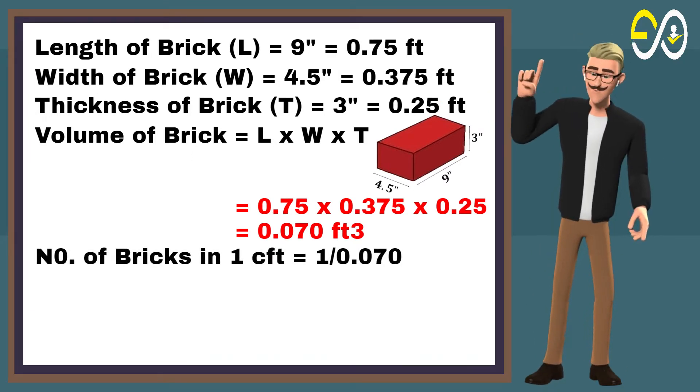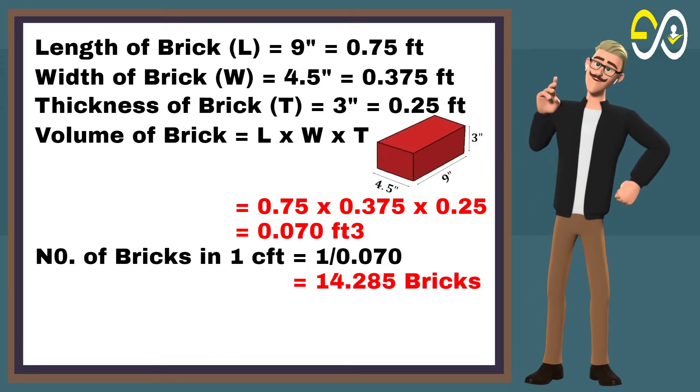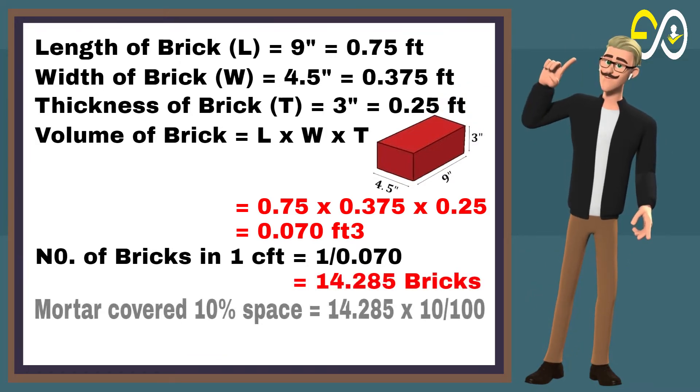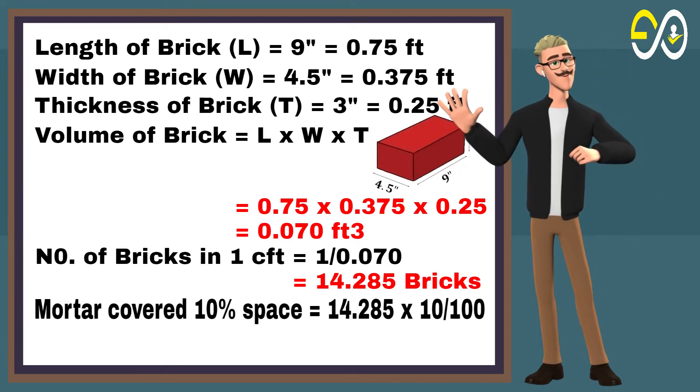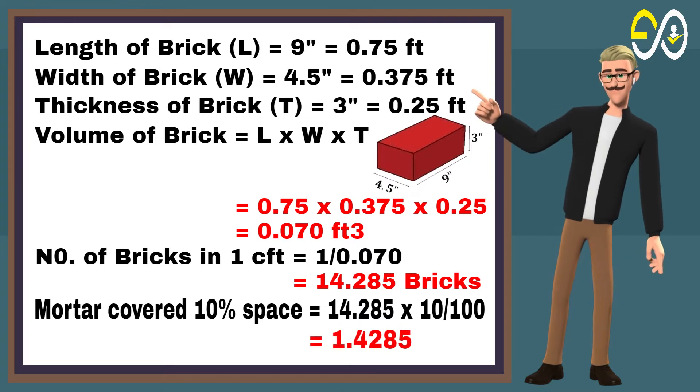Number of bricks in one cubic foot equals 1 divided by 0.070, equals 14.285 bricks. Mortar covered 10% space equals 14.285 times 10 per 100, equals 1.4285.